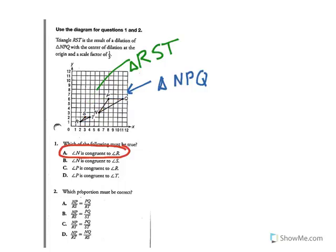So we check the next one. For B, it says NP over RS equals PQ over ST. Since these are all corresponding and set up proportionally, the answer is B.